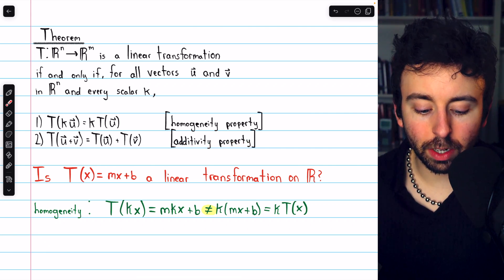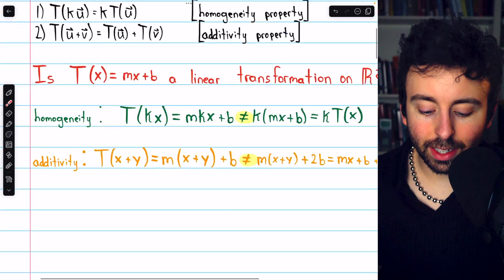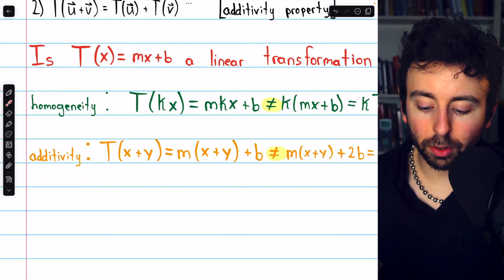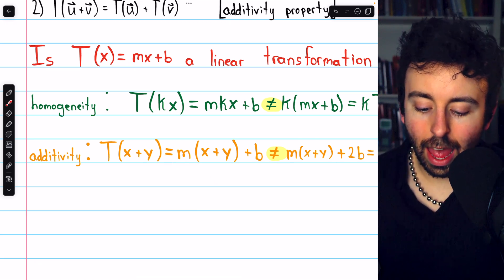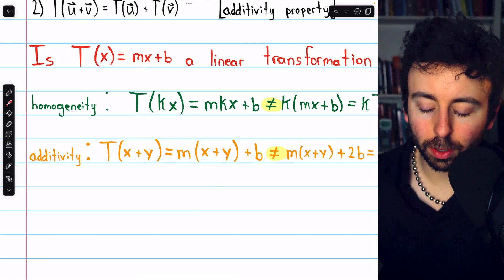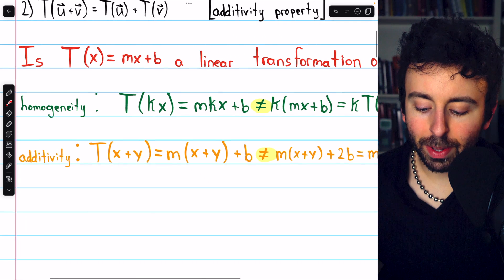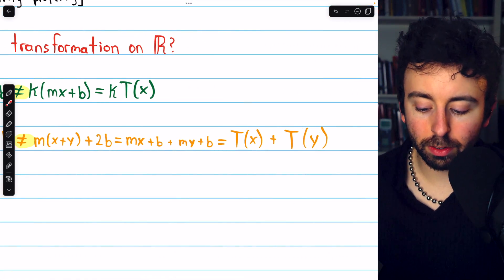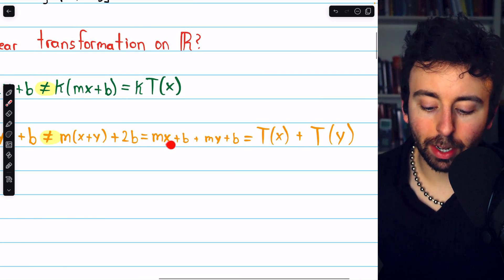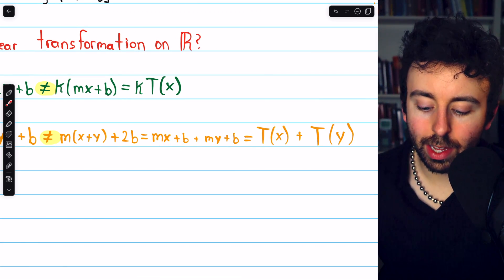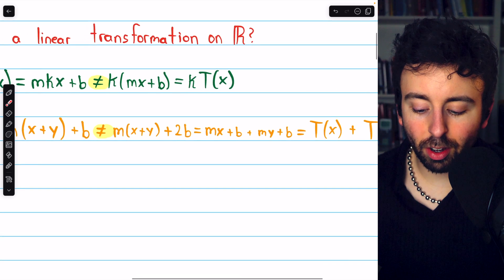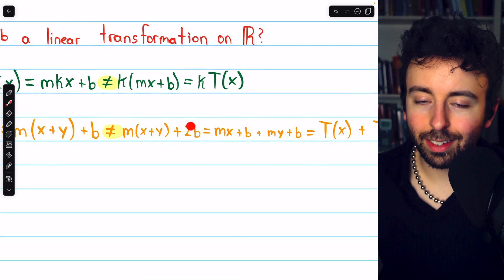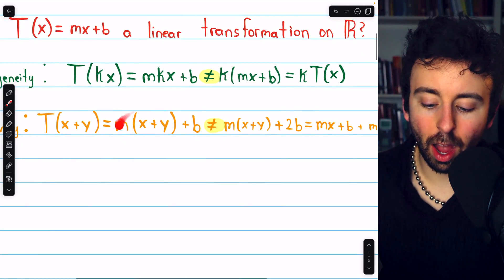We can also check the additivity property, and we find that the additivity property is not satisfied either. T of x plus y equals m times that input x plus y plus b. But that's not equal to what happens if we transform x and y separately and add those. Because T of x is mx plus b, T of y is my plus b, and so their sum is m times x plus y plus 2b.